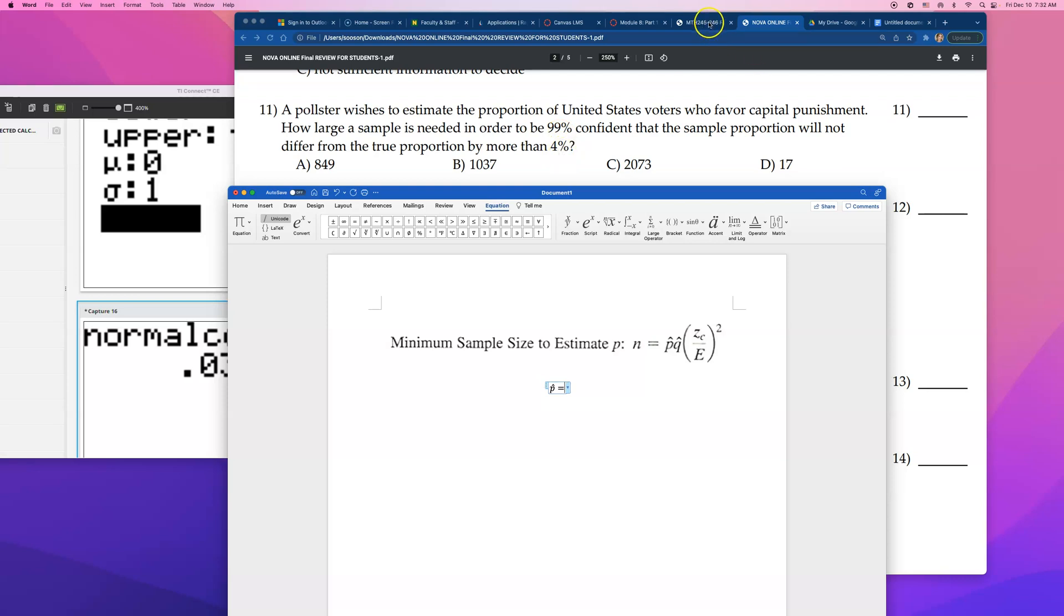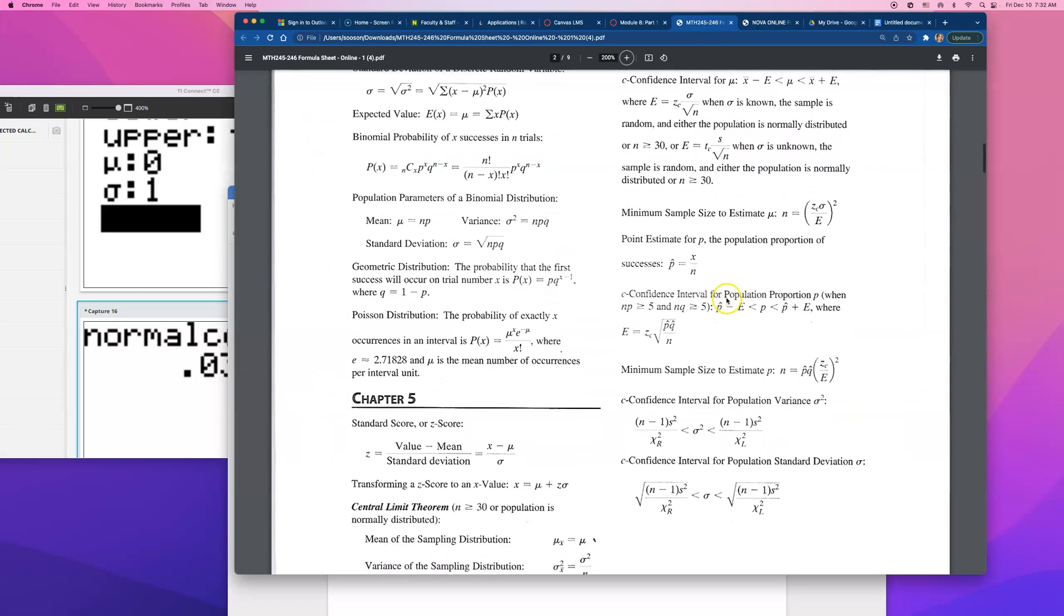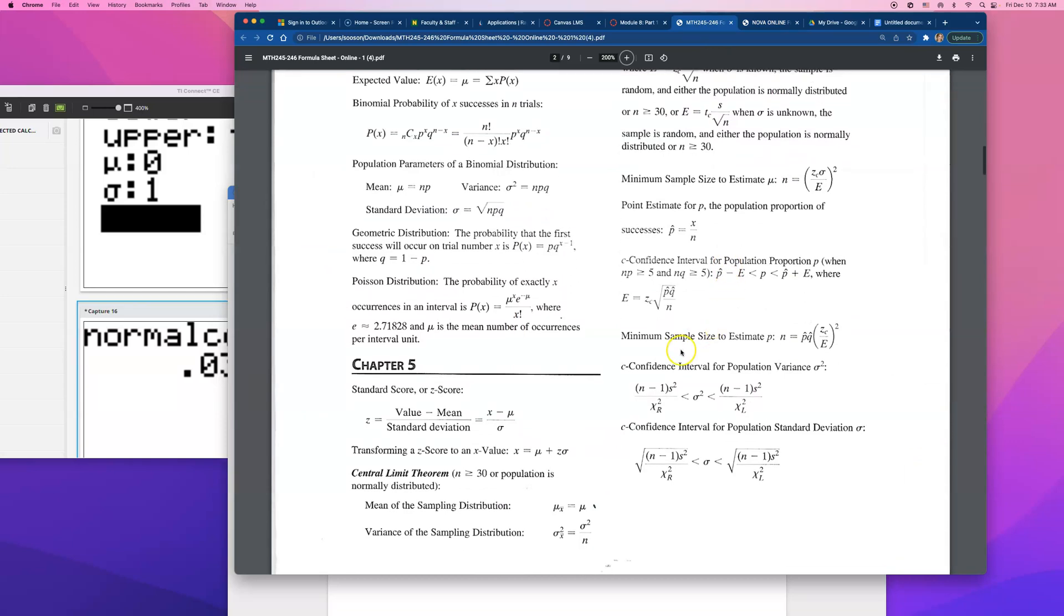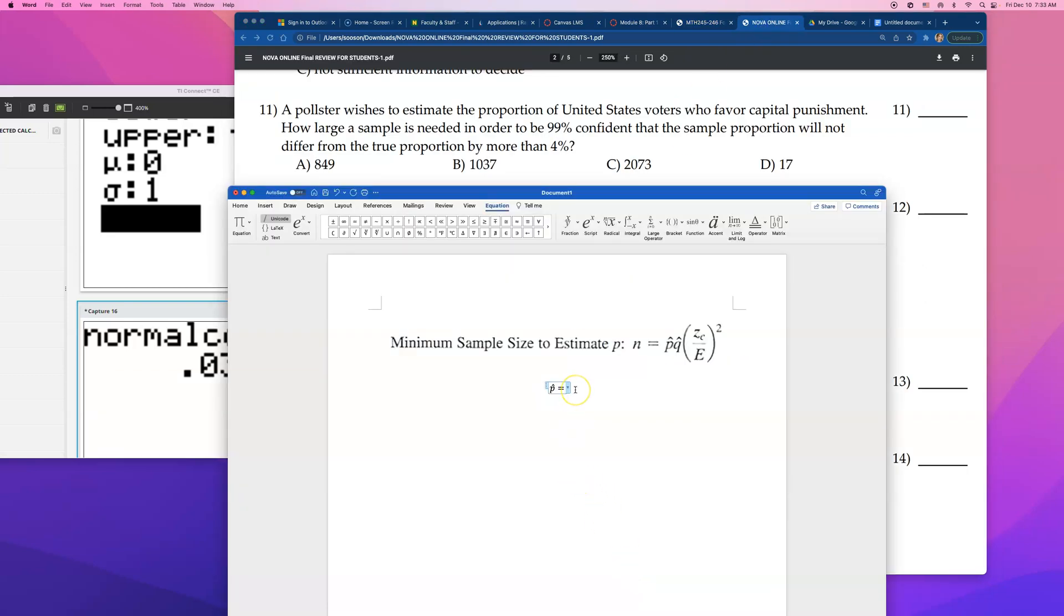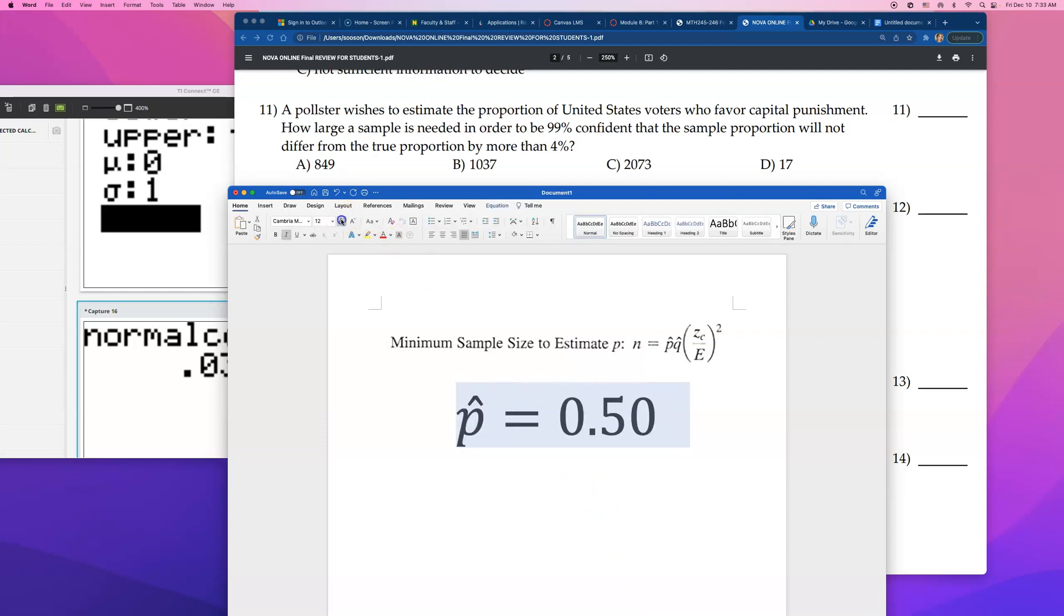Did they say they have a preliminary estimate? They don't. They never really said it, right? That 99% is the confidence level, and that 4% is the margin of error they want. And I think the formula actually even explains it. No, actually, you know what? They didn't. So this is something that you're going to have to know.